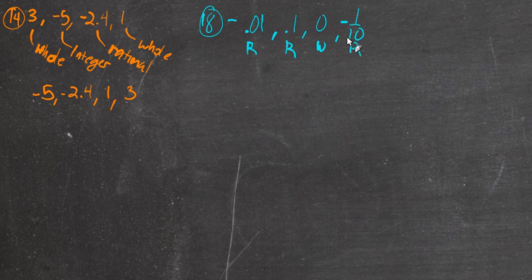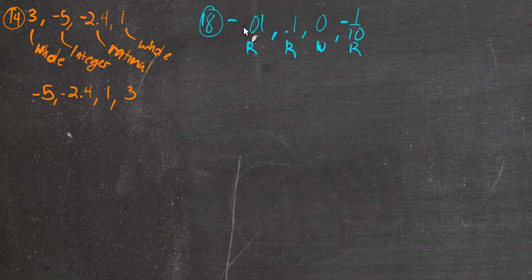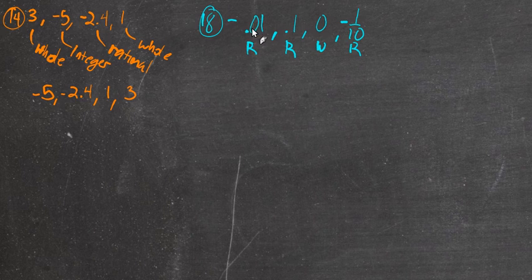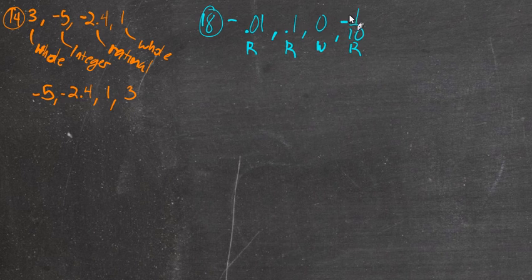Now, what's bigger: negative 0.01 or negative 1 tenth? We have to think of these as the same type. The tenths position is right after the decimal — if we had a 1 there, it's 1 tenth. Moving further right of the decimal gives smaller values: tenths, then hundredths, then thousandths. So negative 0.01 is negative 1 one-hundredth, and negative 1 tenth is a larger piece. That means negative 1 tenth is further to the left on the number line.